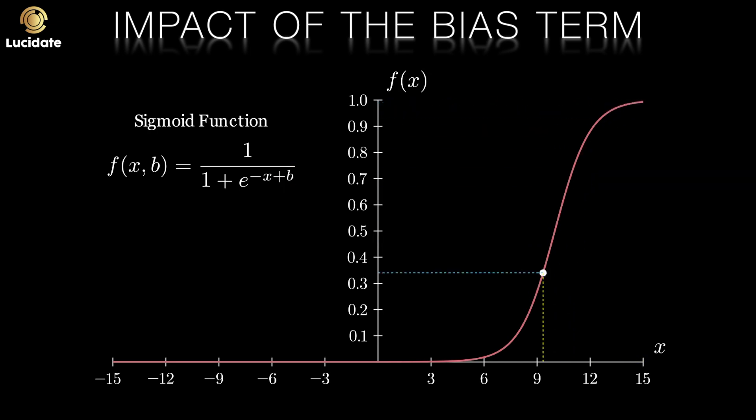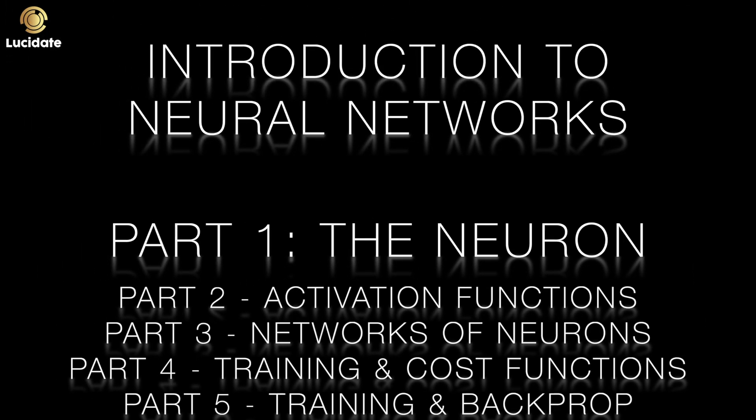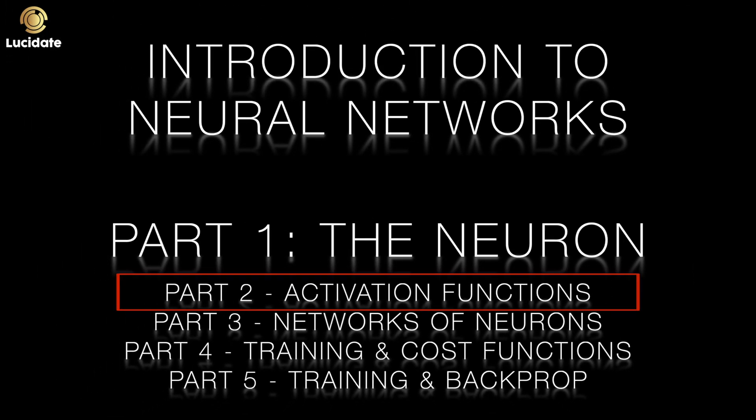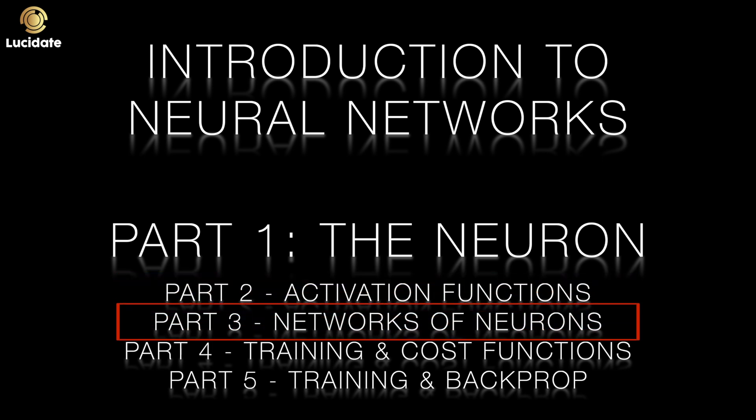This concludes this short blog. I hope that you now have a clearer understanding of what an artificial neuron is. If you have any questions, please leave them in the comments section. In the next video, we'll look at other examples of activation functions and then discuss how we stack neurons together to make networks.